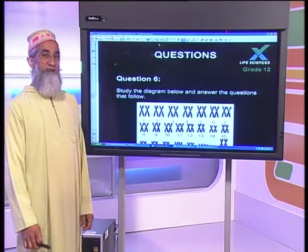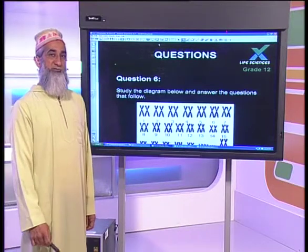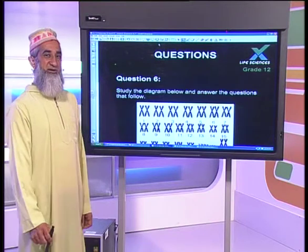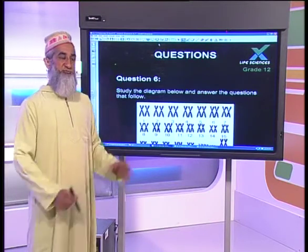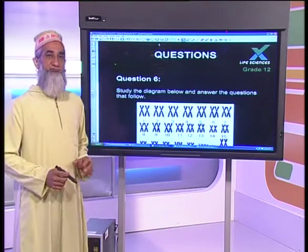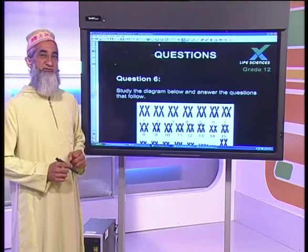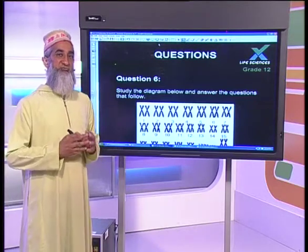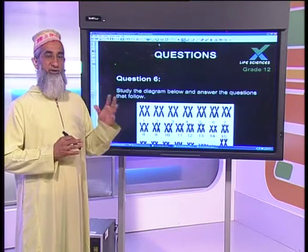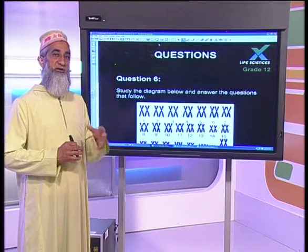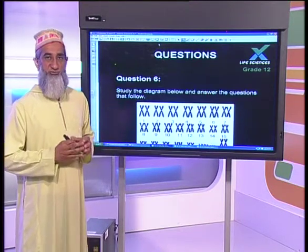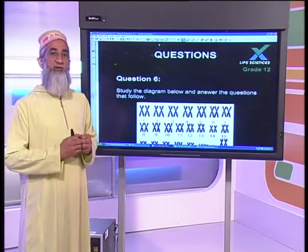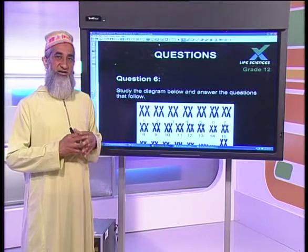We were busy last time with paper one, meiosis, and we take it from there. Just before we go to the questions, a simple explanation on the last thing we did — polyploidy. 'Poly' meaning many, 'ploidy' meaning the number of chromosomes.